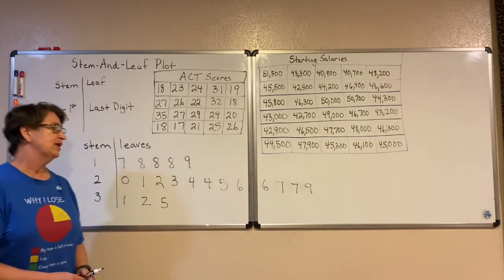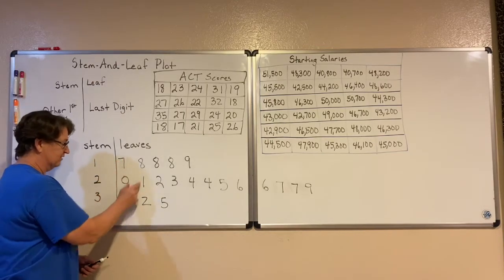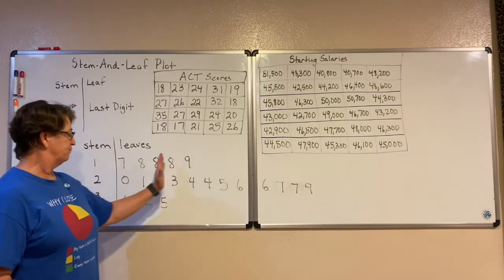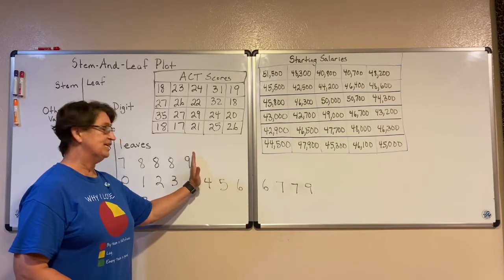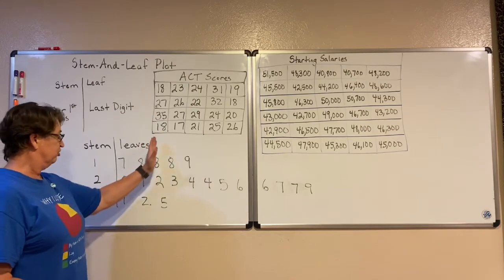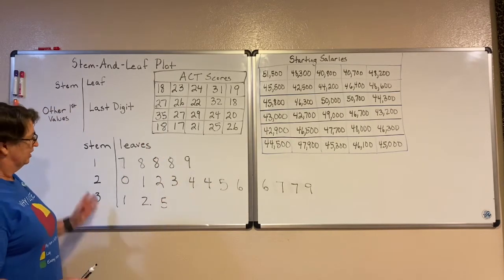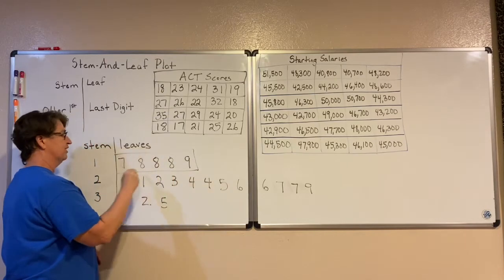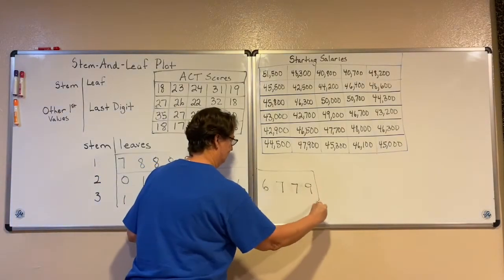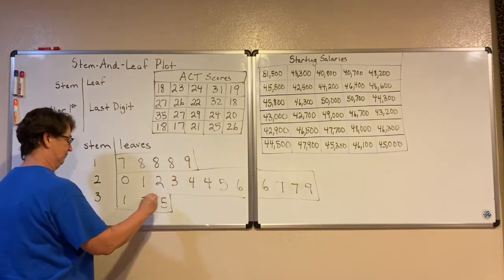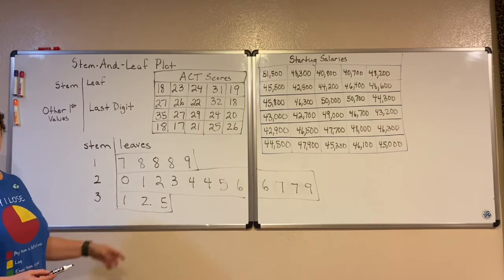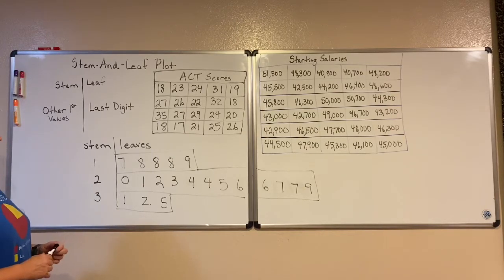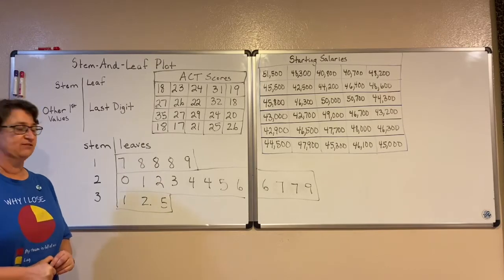Another thing to notice is that the columns should line up with one another — equally spaced — so that we can tell that at this point these two are the same and there are three data values up to that point. If you turn your head sideways, you can kind of look at it as a histogram. If I had drawn bars around it, it shows the frequencies of how many are in each one. But the difference between this and a histogram is that we actually maintain our data values, and we can clearly see that there are more in the twenties than the other two.